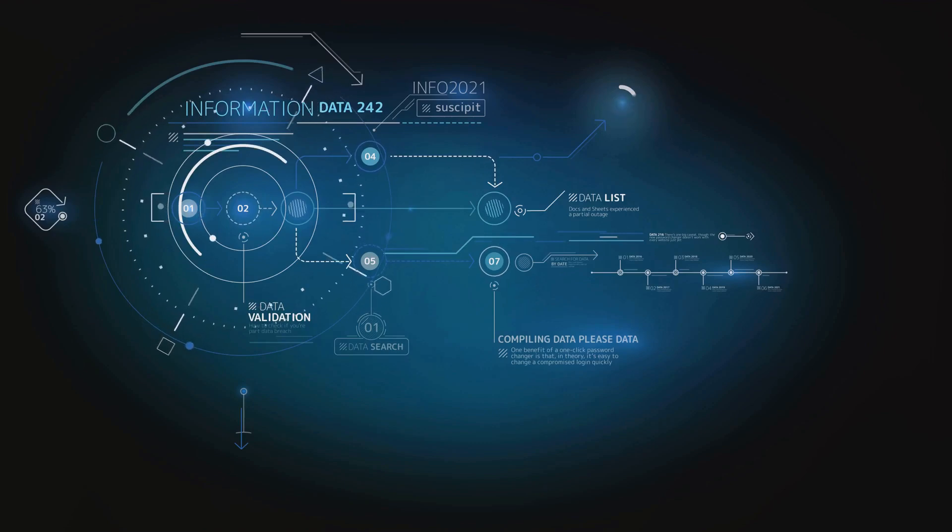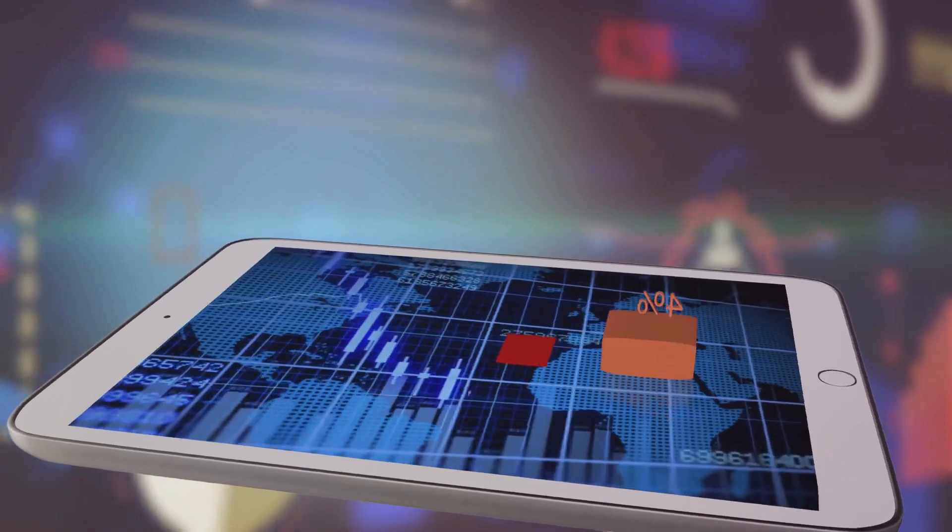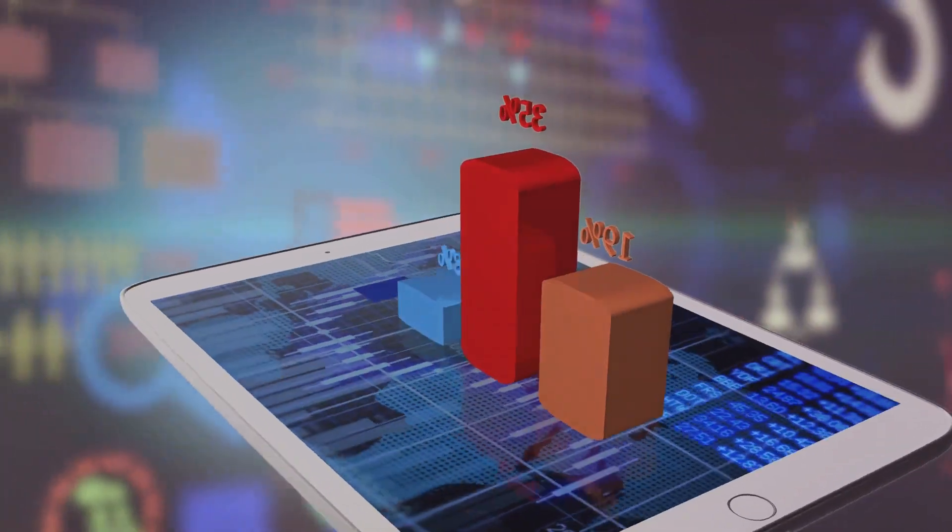So skewness helps us understand the balance or imbalance in our data distribution. Remember, income distribution often skews right, indicating more people have incomes below the average.